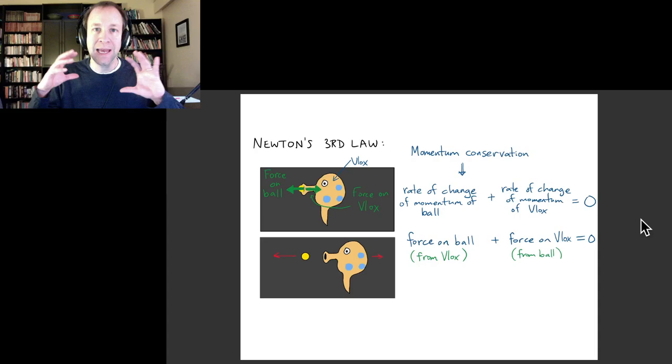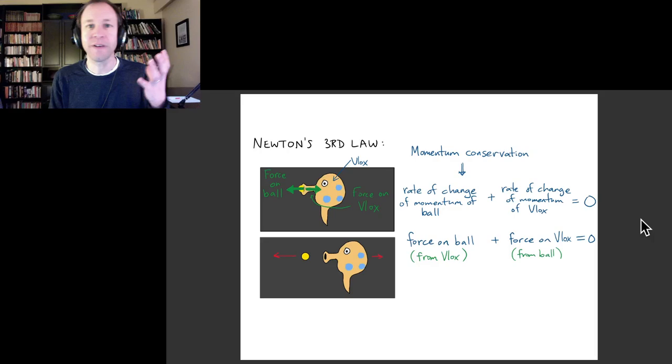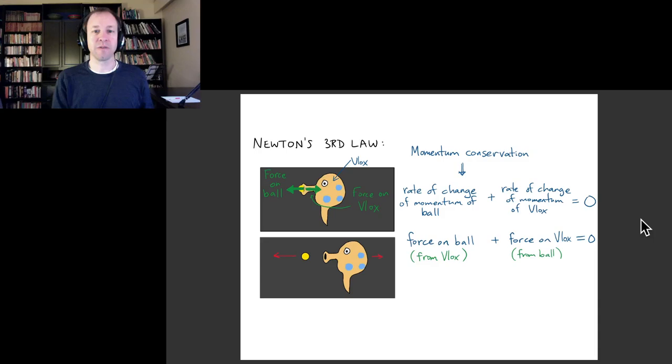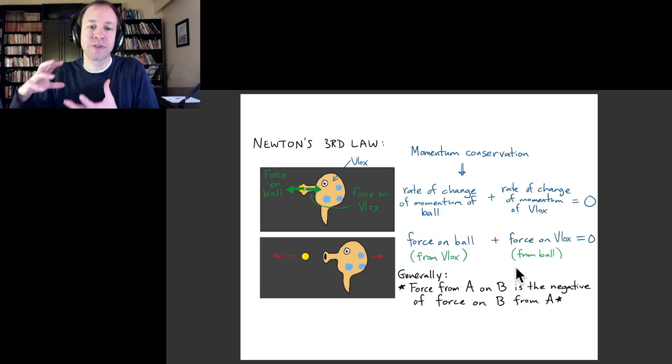And this is a very general result. So if I were in outer space pushing on a ball, the ball would go one way, I would go the other way. What we learned with this argument is that whenever you have two objects, and we think about the force from object A on object B, that's then always going to be the negative of the force on object B from object A.